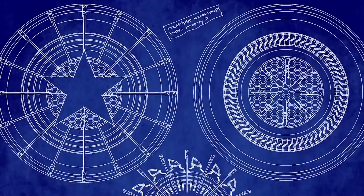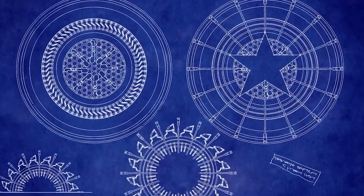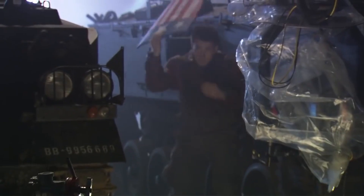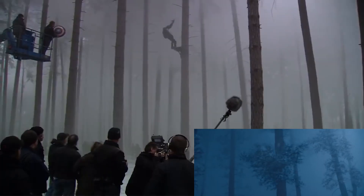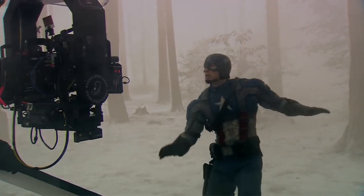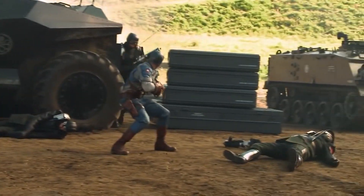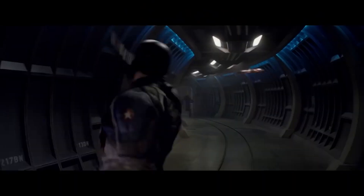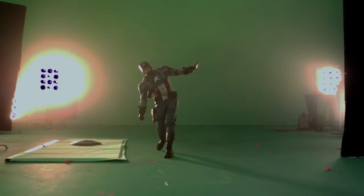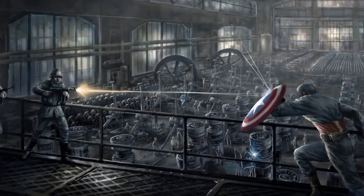Since the shield was made of vibranium, the directors needed to create different versions: metal, rubber, magnetic, and CG for specific purposes in the film. Chris Evans came up with different ways to throw and catch the shield for the CG moments to enhance the action. They wanted it to not look like a frisbee or a boomerang, but have a special arc with which it interacts with the environment. They aimed for all the designs to be right for the story and right for the character.